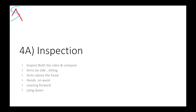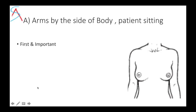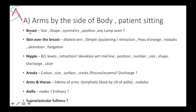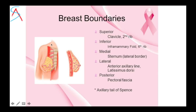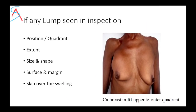The local examination: first is inspection. The first position is arms by the side of the body with the patient in a sitting position — this is the most important position for inspection. Here comment about the breast: its size, shape, symmetry, and position, and whether any lump is seen. A common viva question is about the boundaries of the breast. If any lump is seen, describe the quadrant, extent, size, shape, surface, and margin.